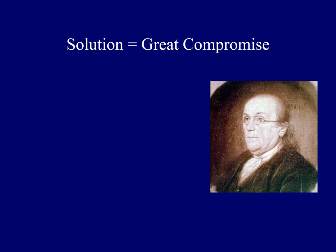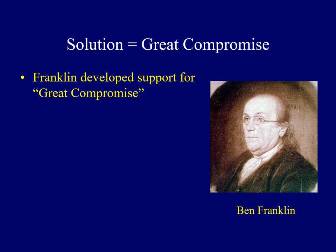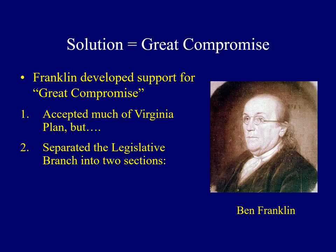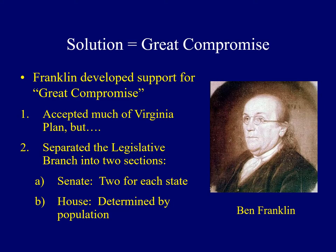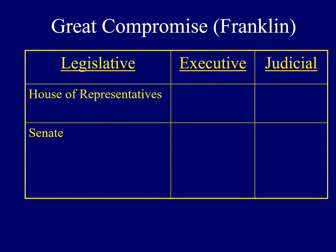Cooler heads prevailed when the oldest delegate, Benjamin Franklin, developed support for what came to be known as the Great Compromise. It accepted much of Madison's Virginia Plan but had a key distinction: it separated the legislative branch into two different chambers. The upper chamber, the Senate, would treat every state equally with two senators each. In the House of Representatives, the number would be determined by each state's population. This struck a balance — big states liked the House of Representatives, and small states liked the Senate.